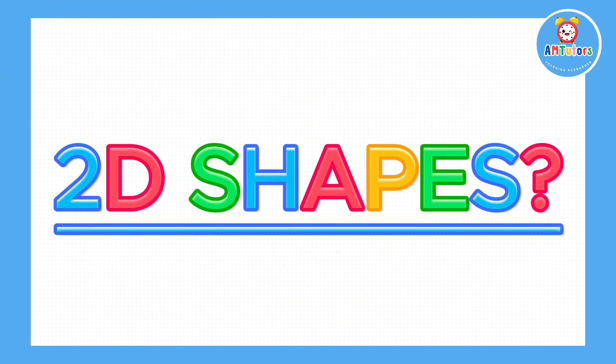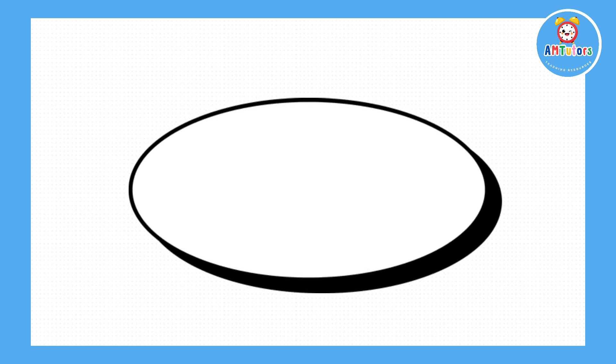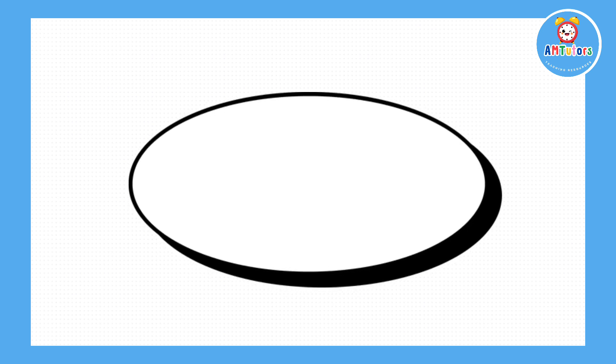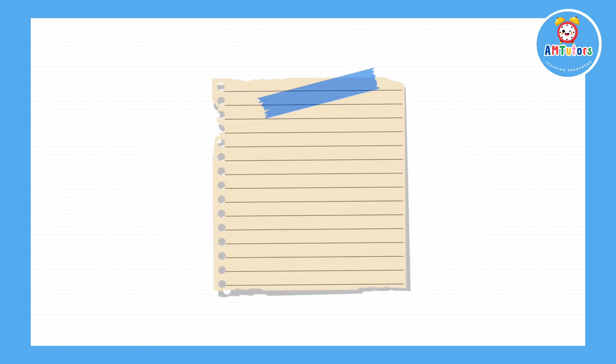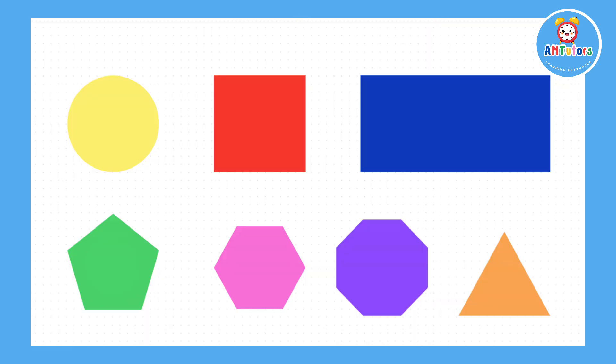So what are 2D shapes? A 2D shape is a shape that is flat, a bit like a piece of paper. They have sides and corners but they have no thickness.